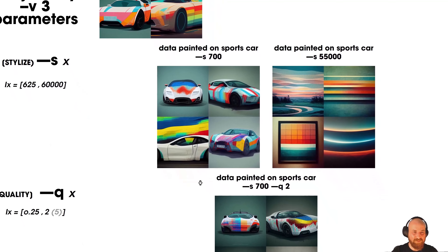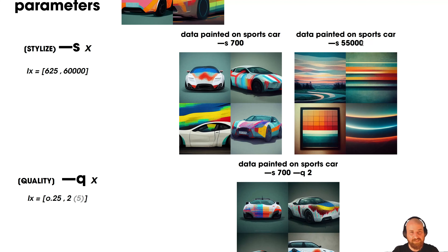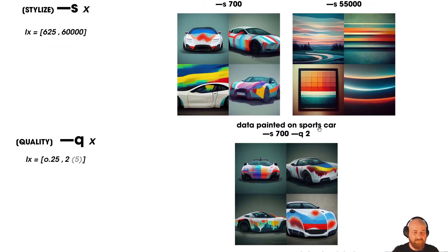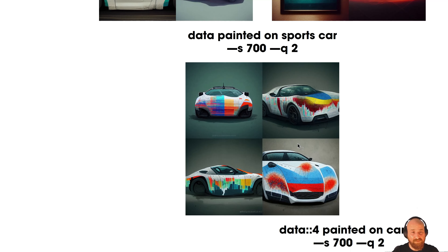In the next step I did two things. First, I increased the stylize number to 55,000 — close to the 60,000 maximum — and that's exactly what I'm getting: abstract results. The prompt still has car, sports car, data, and painted, so we're getting lots of abstract output. Then, staggering down, I added Q2, which was the maximum quality allowed at the time, and you immediately see intricate details being added to the images.